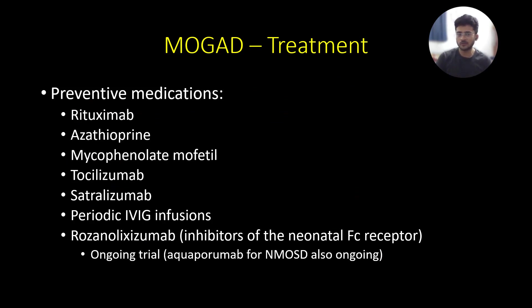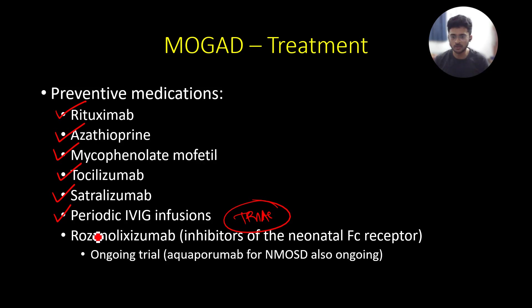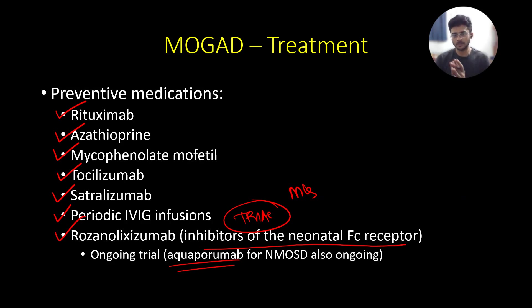If prophylactic medications are needed, similar drugs to NMOSD can be tried: rituximab, azathioprine, mycophenolate mofetil, anti-IL-6 agents like tocilizumab and satralizumab, and periodic IVIG infusions. There is an ongoing trial for rozanolixizumab — an inhibitor of the neonatal Fc receptor approved for myasthenia gravis — and a similar ongoing trial for aquaporumab for NMOSD. This covers treatment, management, and patterns of involvement in MOGAD.